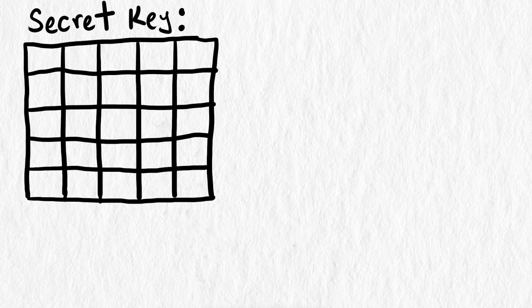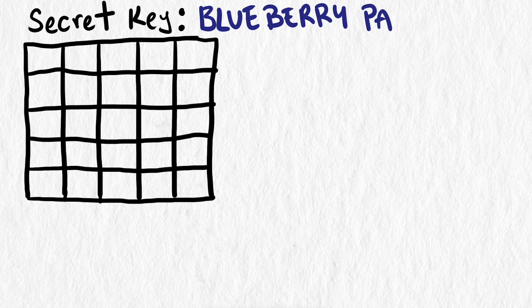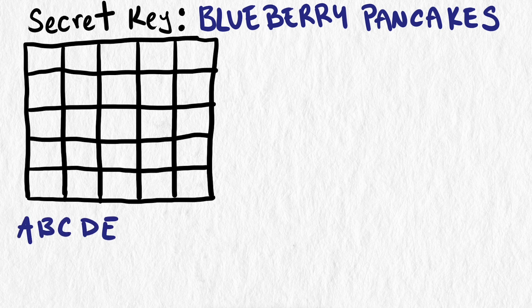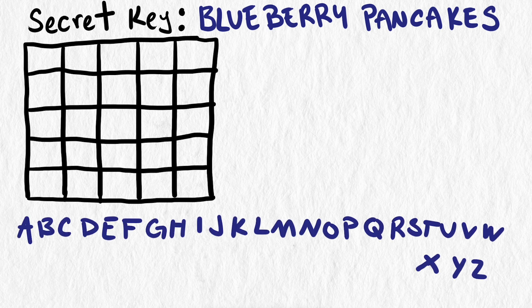So how do we use this new, complex cipher? The first step is creating a 5x5 table using a secret key. Knowing this key is what allows someone to decrypt and read the message. Often the key was a word or a short phrase, though it doesn't need to be. Say your secret key is "blueberry pancakes." We would start by using the letters from our key to form the 5x5 box, using those letters to arrange the letters of the alphabet.